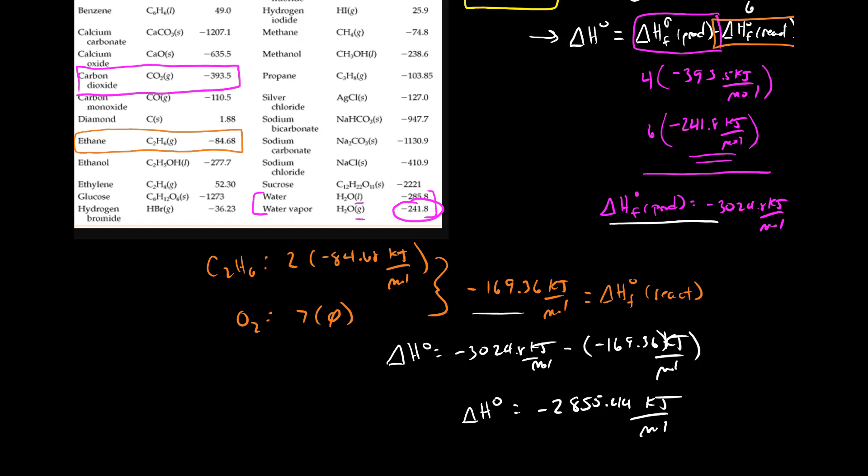So this reaction is very exothermic. There's a lot of heat that's produced in this reaction. This is the amount of heat that will be produced. It's produced because of the negative sign when exactly one mole of our reaction occurs.